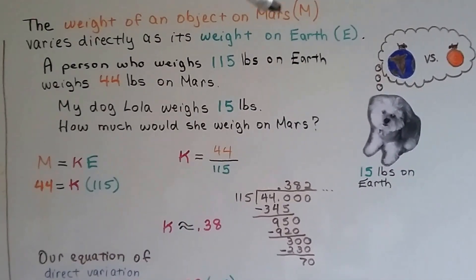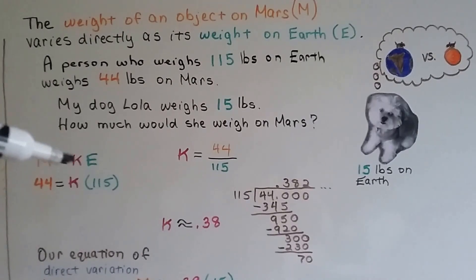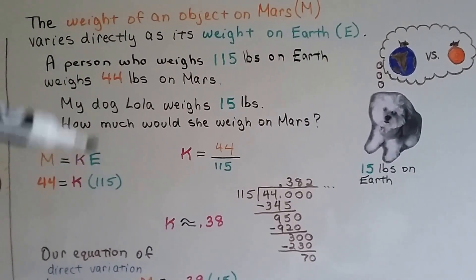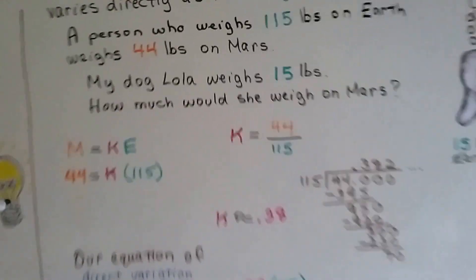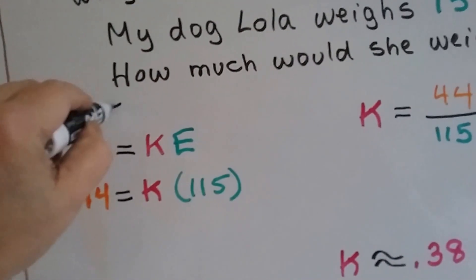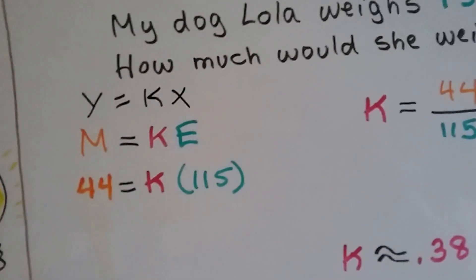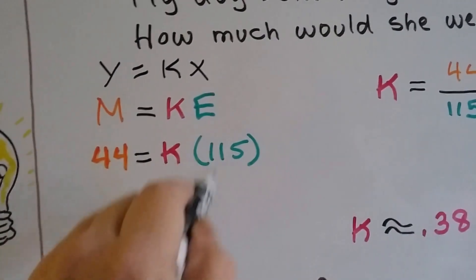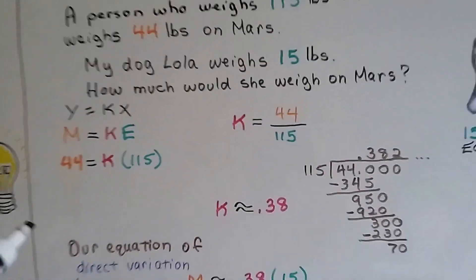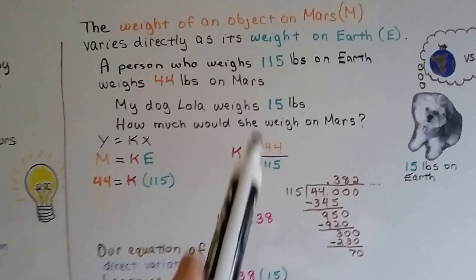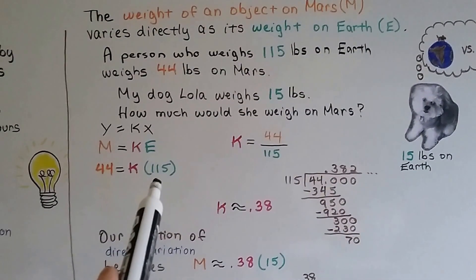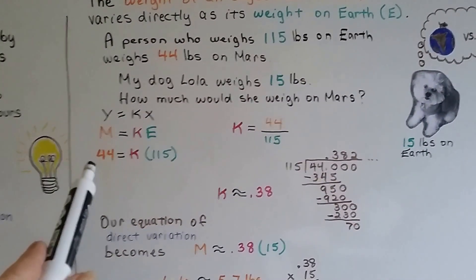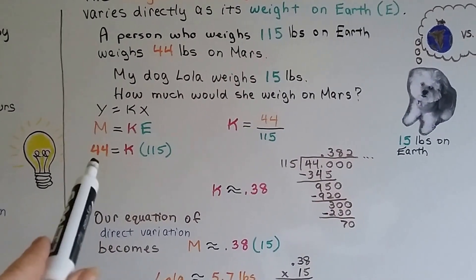We've got Mars equals that constant value times the E. That's going to take the place of the y equals kx. We're just going to plug in our information. If the Earth one is 115, that's going to come back here. And the Mars one, the 44, is going to be up here. It's the y value, the M, right?